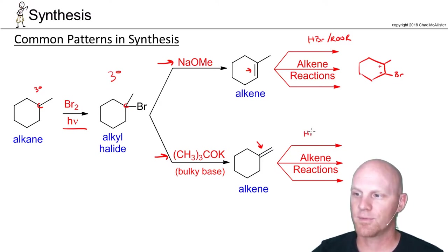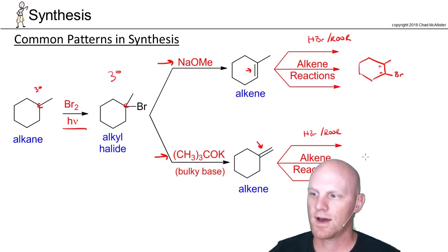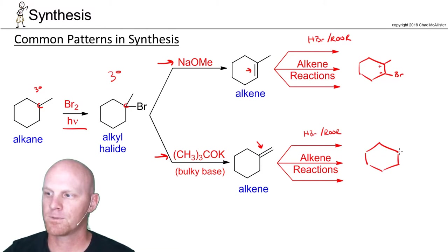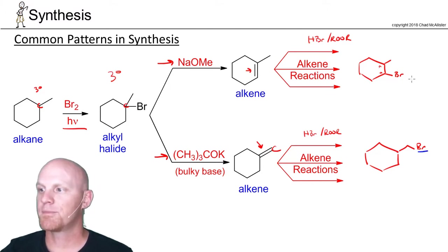If I did it on the other hand up here, HBr and peroxide, now I'd get the bromine ending on the less substituted side of this alkene out here, giving this product. And so here, depending on where we form the alkene would affect where we can ultimately, in the end, get the bromine.